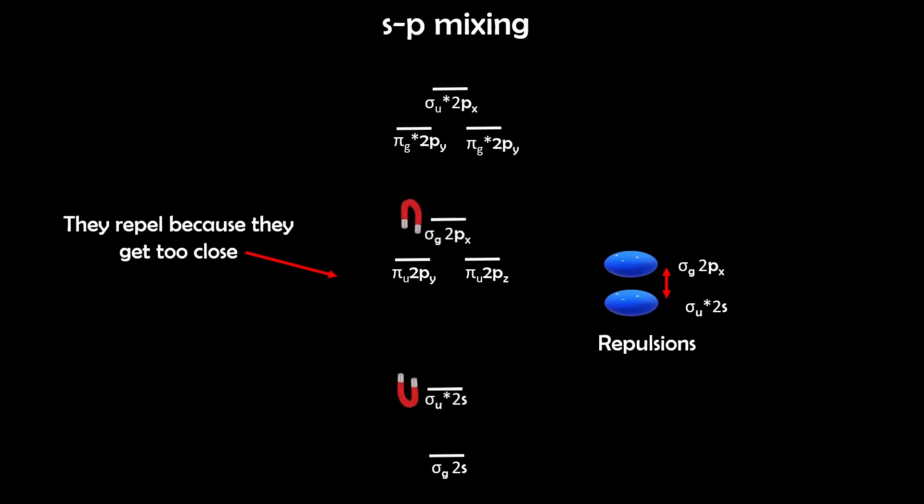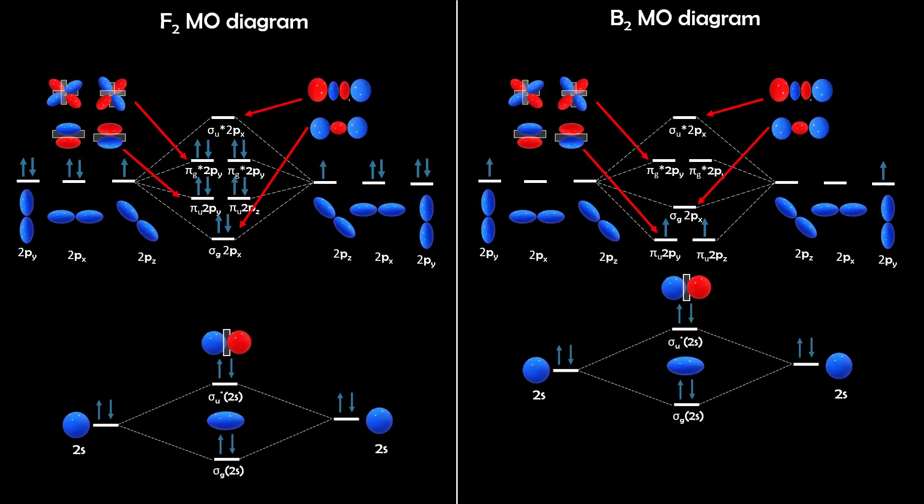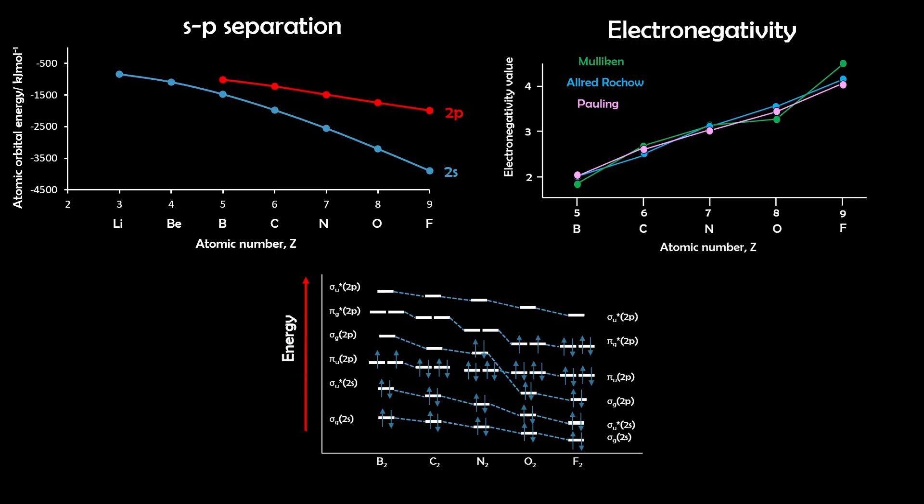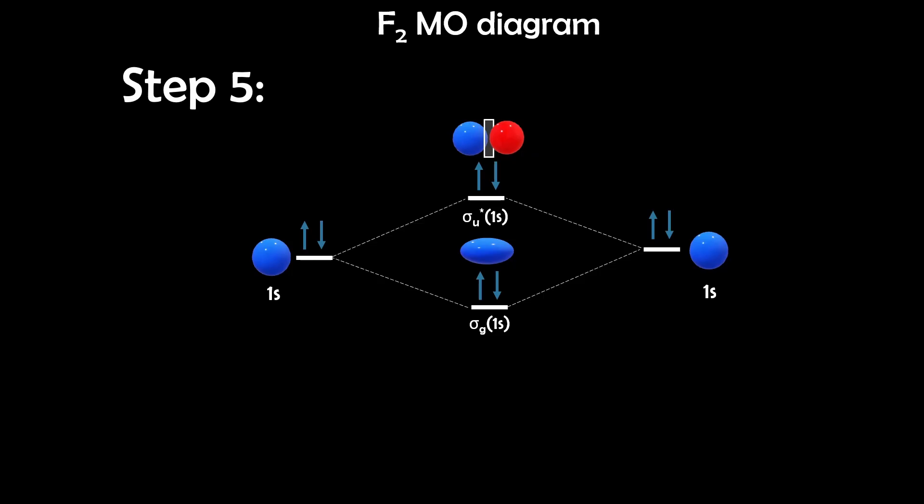When the 2s and 2p orbitals mix, their positions change because they repel each other — pushing the s orbital further down and the px orbital further up, sort of like magnets getting too close. This is essentially what sp mixing is, and it causes the σ2p orbital to shift above the π2p orbitals. You'll see this in molecules like B₂, C₂, and N₂. Compare F₂ and B₂ for example — these trends follow the pattern of electronegativity. Back to F₂, there is no sp mixing, so we follow the normal energy order.